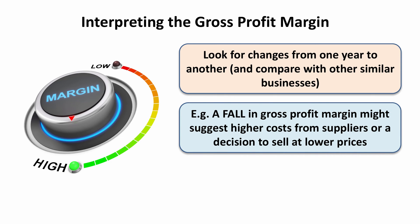If the gross profit margin has fallen, there could be a number of reasons for this. It could be that the cost of goods sold has gone up — perhaps suppliers are charging us a higher price, which could be connected to a change in exchange rates. Or it could be that we've decided or been forced to sell at lower prices, thereby reducing the gross profit margin. It could also be that on average we've sold more low-margin products compared with high-margin products, so a change in gross profit margin can often be associated with a change in the mix of products that we're selling.